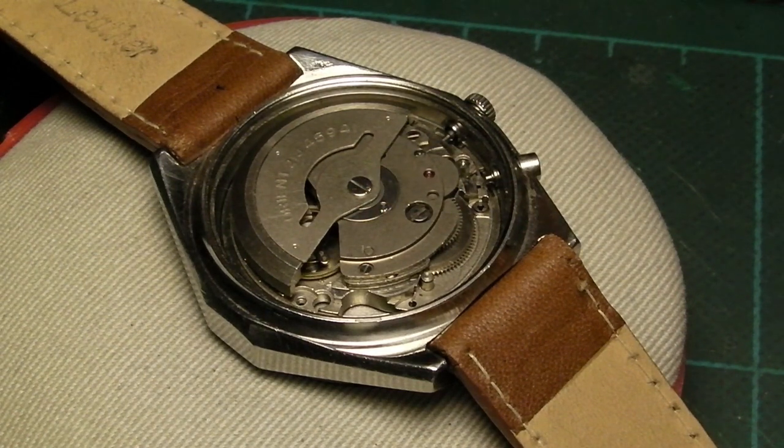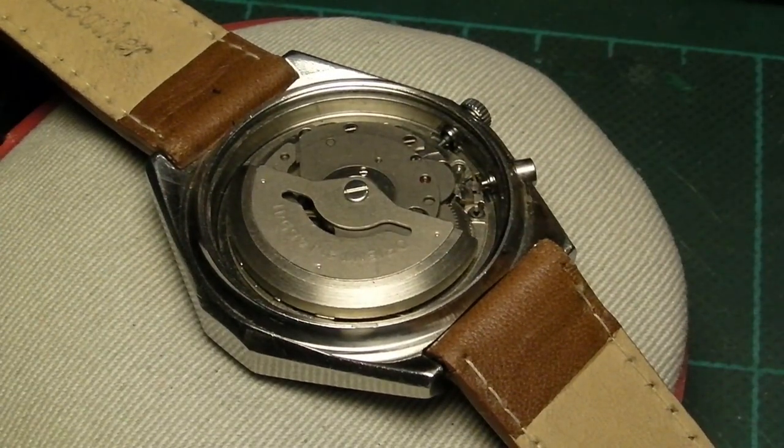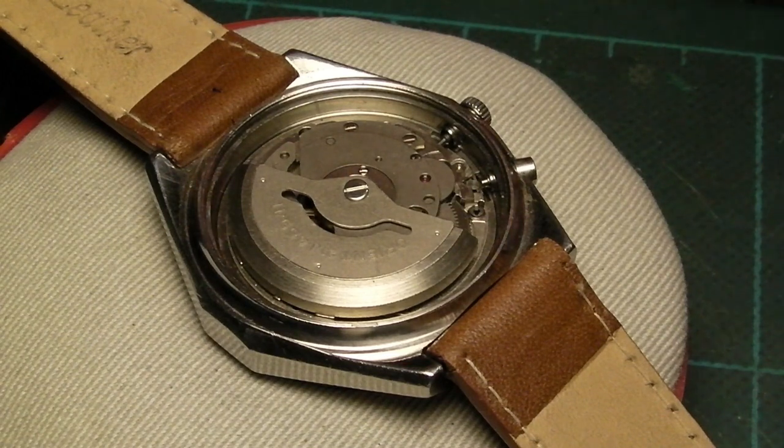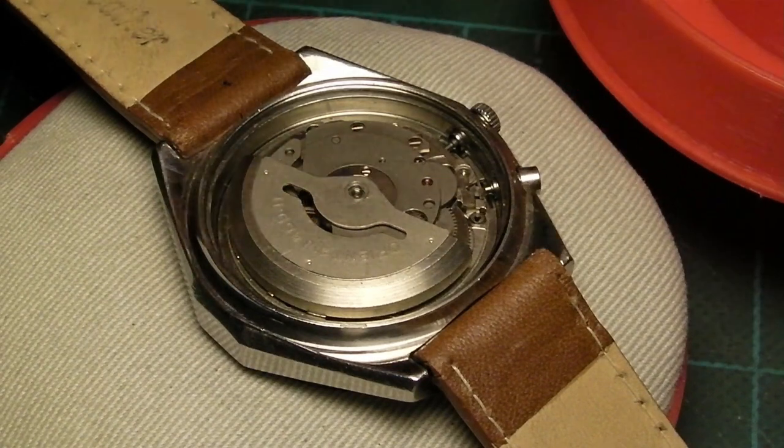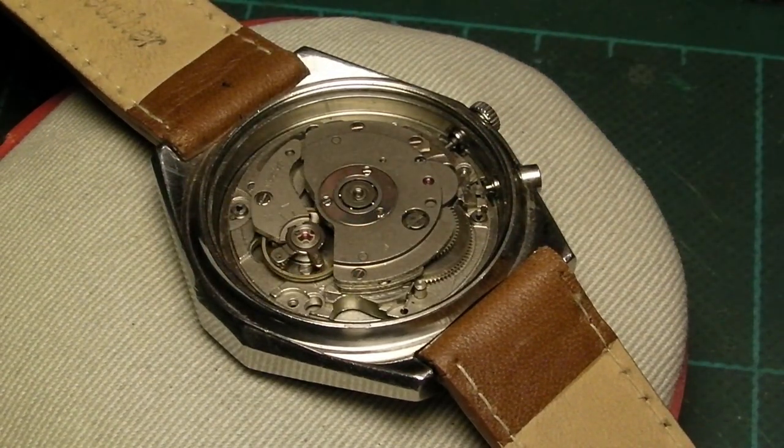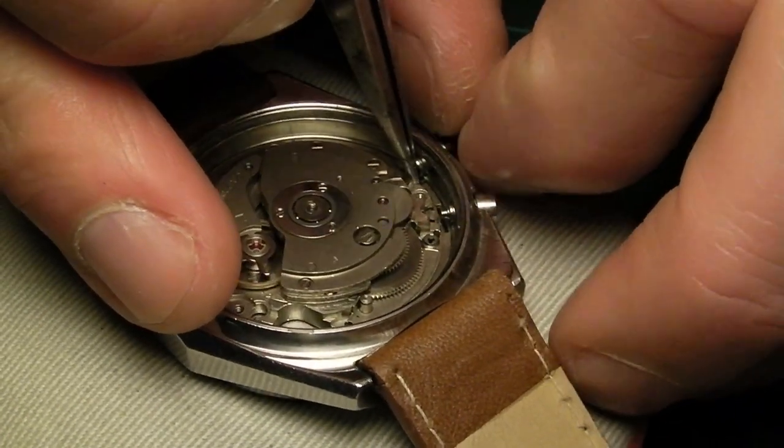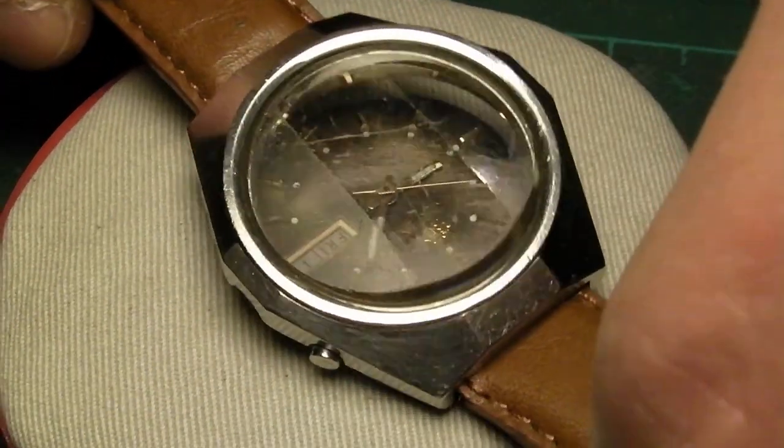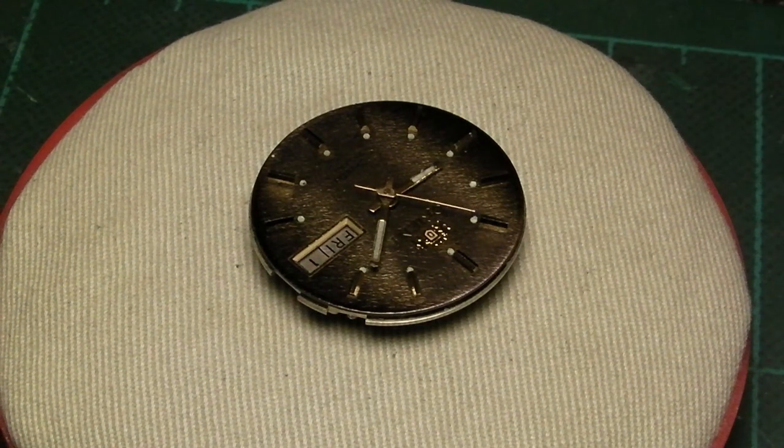Next to be removed is the oscillating weight. I always do this on automatic movements before I uncase them. Then the stem is removed from the case by pulling out to the hand setting position, whereupon the setting lever becomes visible and you can depress that with your tweezers.